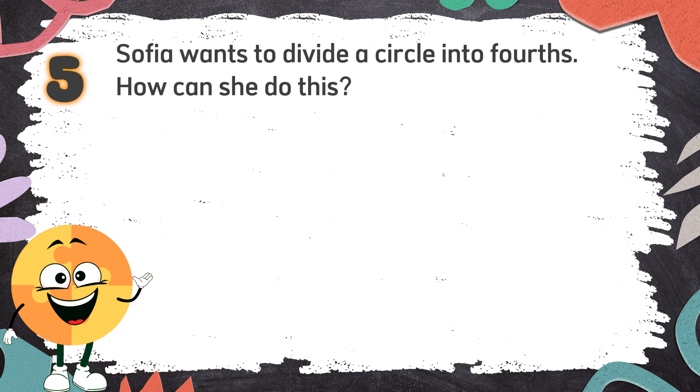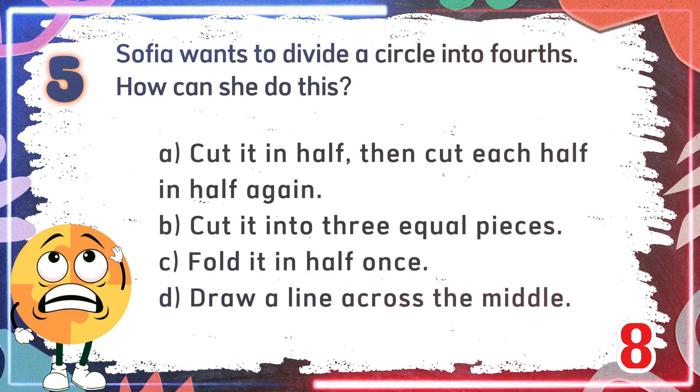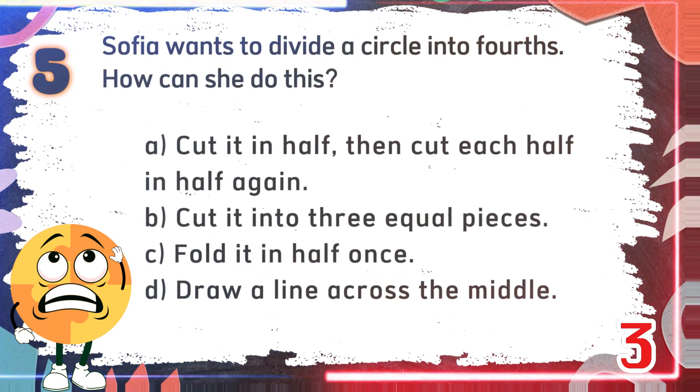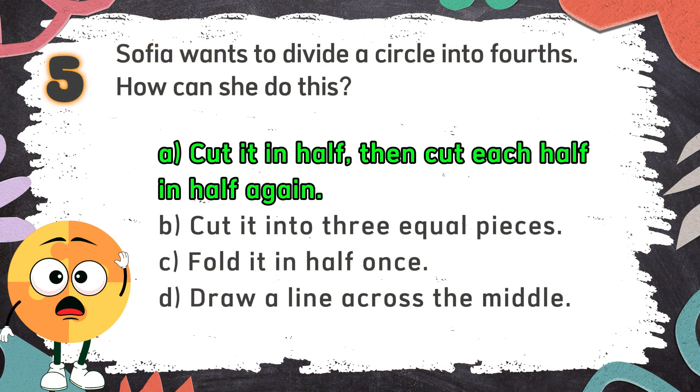Number 5: Sophia wants to divide a circle into fourths. How can she do this? The choices are A. Cut it in half, then cut each half in half again, B. Cut it into three equal pieces, C. Fold it in half once, D. Draw a line across the middle. The correct answer is A. Cut it in half, then cut each half in half again.